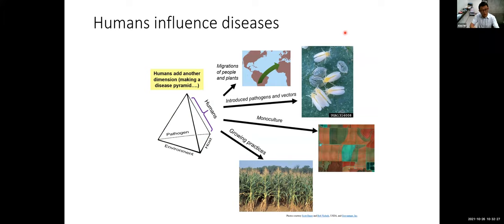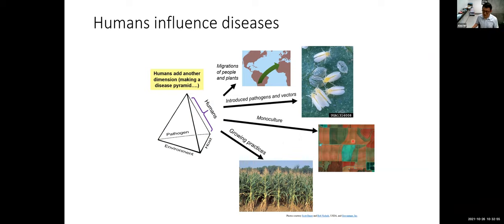The disease triangle also has a human dimension — humans can influence the outcome of that interaction, making it a disease pyramid. When humans migrate, they bring plants along, which can introduce pathogens and vectors. Agriculture involves monocultures that are genetically uniform and very prone to pathogen attack. Also, growing practices like planting at high density modify the micro-environment and can influence the interaction outcome.